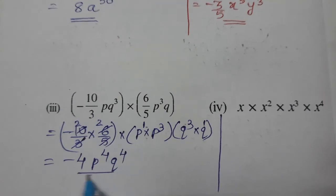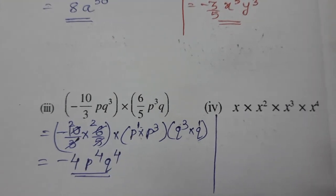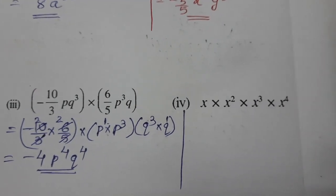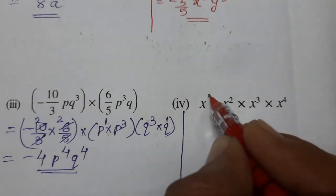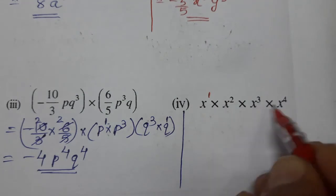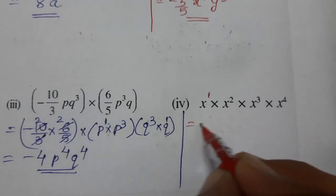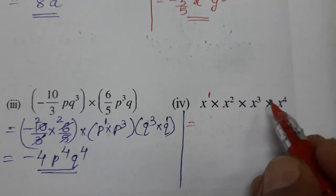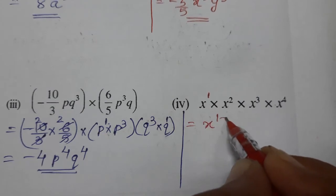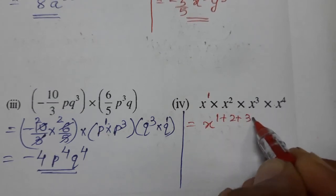I also do the fourth one, so look what happens. Now here, no power means 1, and no numbers are there. So only powers, and all variables are same, x only. So we have to add powers since base is same.